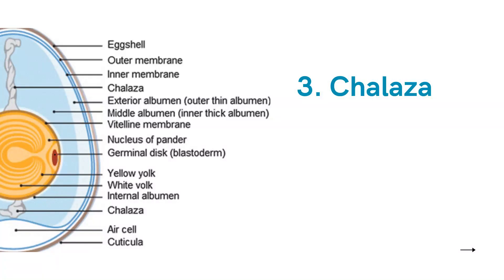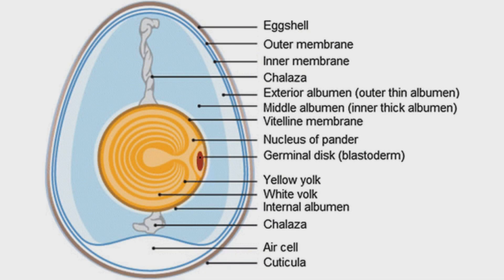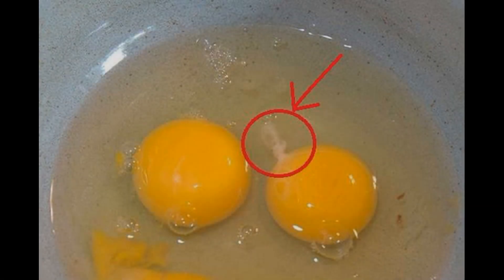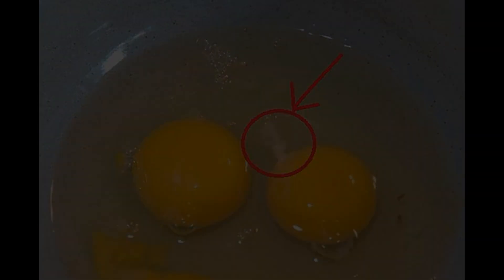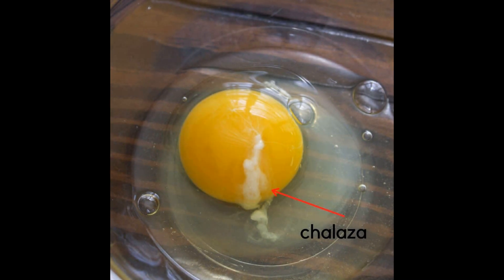The chalazae are two cord-like structures which keep the yolk centered in the egg, and first appear in the uterus. The chalazae also function as an axis around which the yolk can rotate, and keep the germinal disc in hatching eggs uppermost at all times.